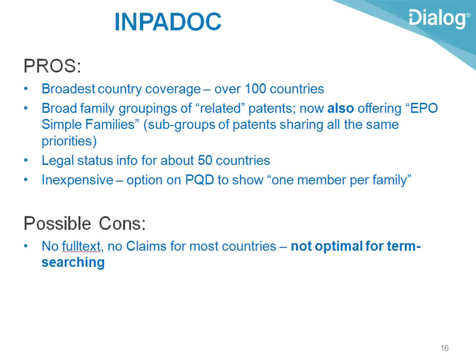Impadoc has the broadest country coverage of any patent database — now about 110 countries. For about half of those, it also has legal status information, which is often quite detailed. Family information can be found in Impadoc two different ways: it gives you EPO simple families — the group of patents sharing all the same priorities, which are very similar to each other — but Impadoc will also show you a broader complete patent family where perhaps only one priority application number is shared, showing you not only identical twins and triplets, but also cousins and second cousins.